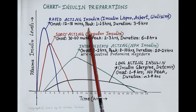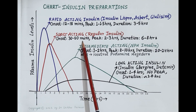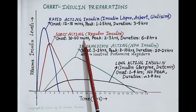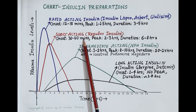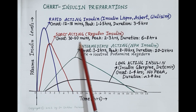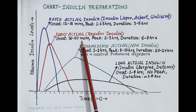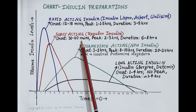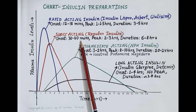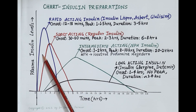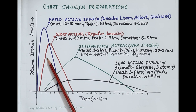Like rapid acting insulin preparations, short acting insulin also controls post-prandial rise in blood glucose. Since the onset is between 30 to 60 minutes, it should be administered 30 minutes before breakfast, lunch, and dinner. Adherence to this schedule is often inconvenient, and thus rapid acting insulin preparations are preferred over short acting insulin preparations.